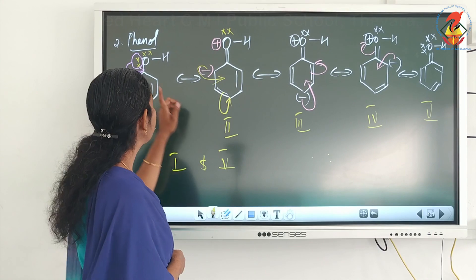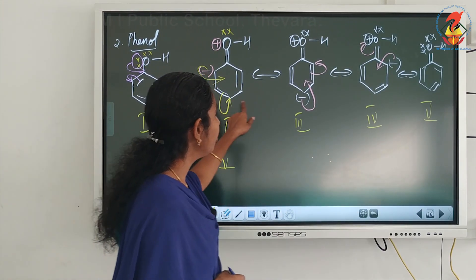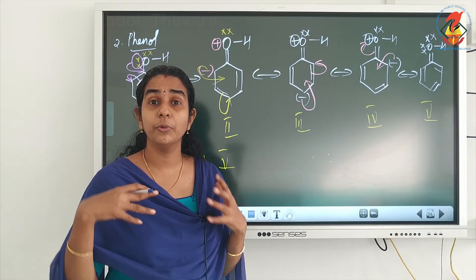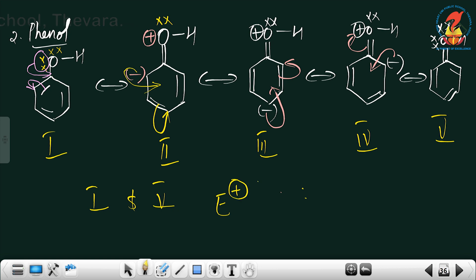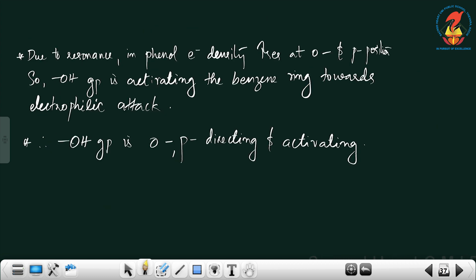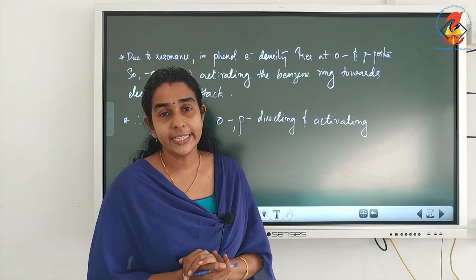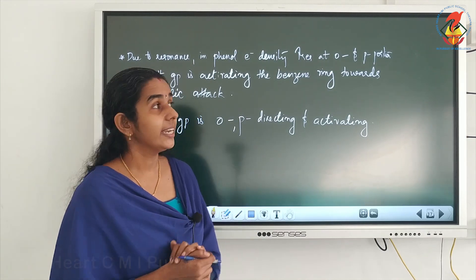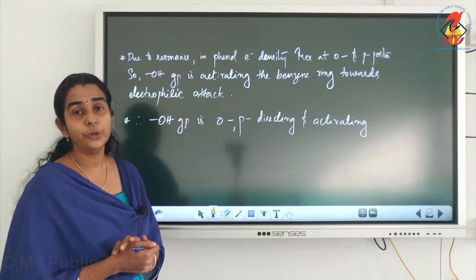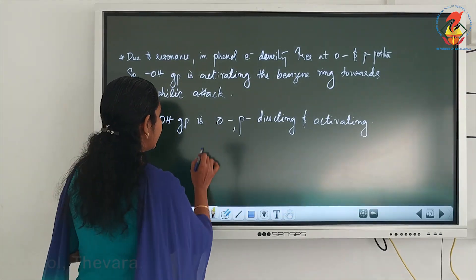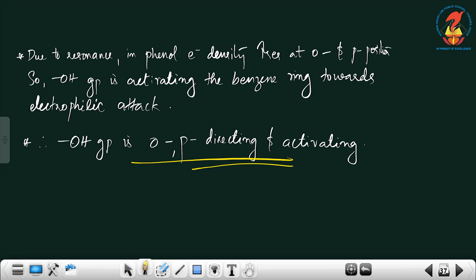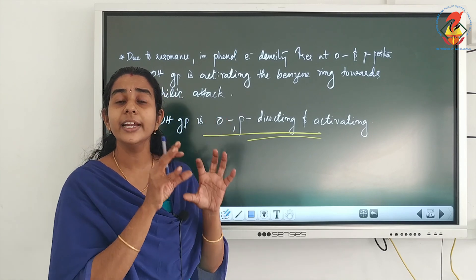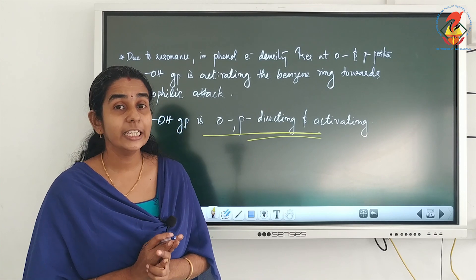Due to resonance in phenol, the electron density increases only at ortho and para positions, making them more electron-rich. So if an electrophile attacks phenol, it attacks at the ortho and para positions. The OH group activates the benzene ring by increasing electron density at these positions, so OH group is ortho-para directing and activating.